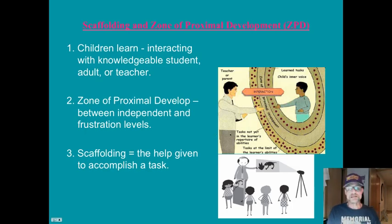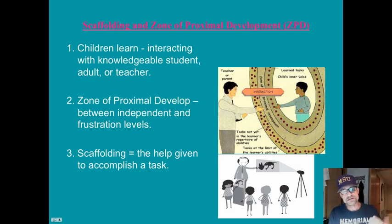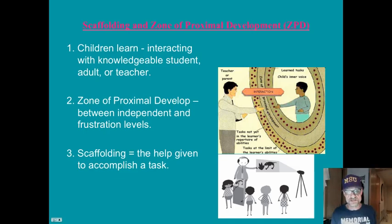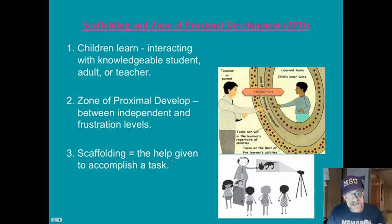The zone of proximal development is that place between where a child can do a task independently and where the task is so hard it frustrates the child. That place right in the middle — between independent and frustrated levels — is the level where children can perform a task with the help, or scaffolding, of a teacher.